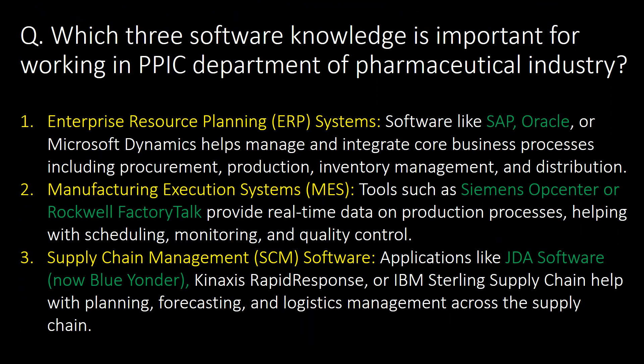Which software knowledge is important for working in the PPIC department of the pharmaceutical industry? First, Enterprise Resource Planning (ERP) systems — examples include SAP or Oracle. Second, Manufacturing Execution Systems (MES) — examples include Siemens Opcenter or Rockwell FactoryTalk. Third, Supply Chain Management (SCM) software — examples include JDA Software, now known as Blue Yonder.